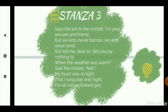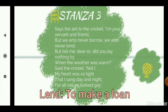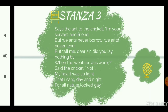Now I will explain the third stanza. The ant says to the cricket: I am your servant and friend, but we ants never borrow, we ants never lend. The ant says: I'm sorry, we never take anything from anybody and we don't give anything as a debt either. But tell me dear sir, did you lay nothing by — did you not keep anything aside, did you not save any food during the summers — when the weather was warm? The ant is questioning the cricket: did you not put aside any food for yourself during the summer?